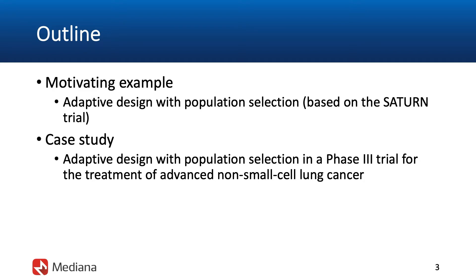For example, it could be best to perform the final evaluation of the treatment effect only in the subset of patients with certain characteristics. Or in certain cases, it would be most meaningful to proceed with the original pre-specified analysis and examine the magnitude of the treatment benefit in the overall population. A decision rule could be applied at the time of an interim assessment to choose the most promising patient population and the most meaningful scientific hypothesis for the final analysis. This is how we define adaptive population selection designs.